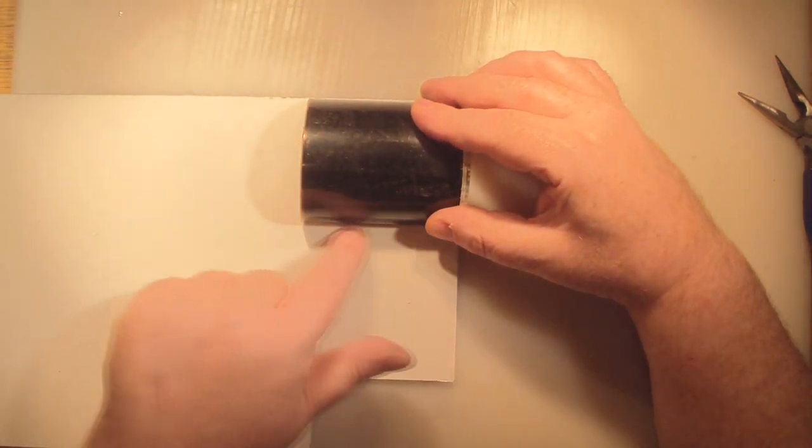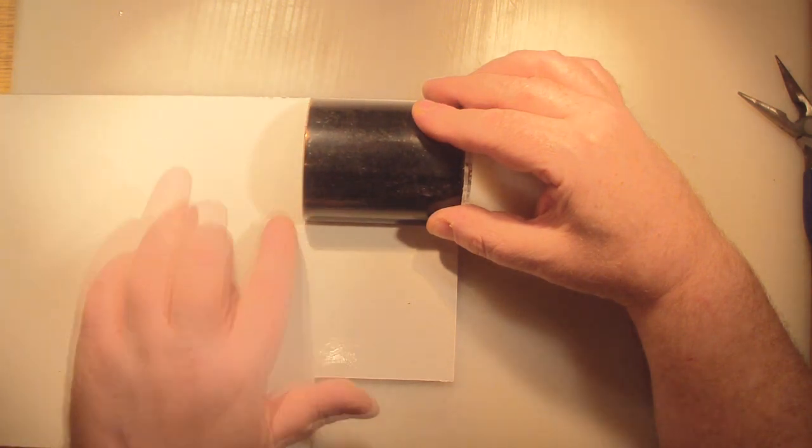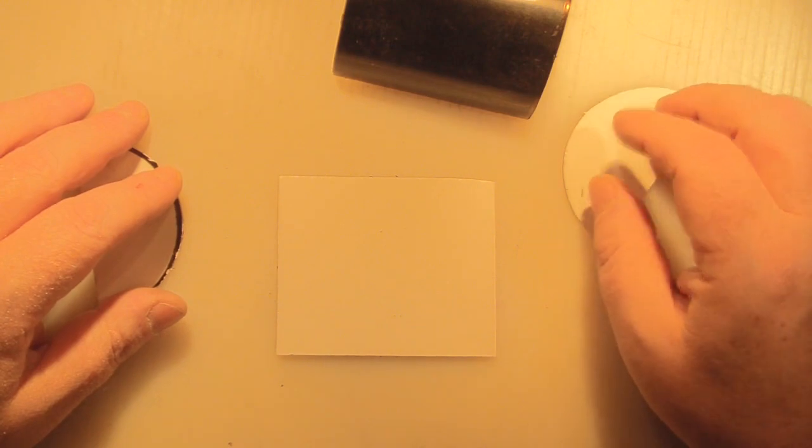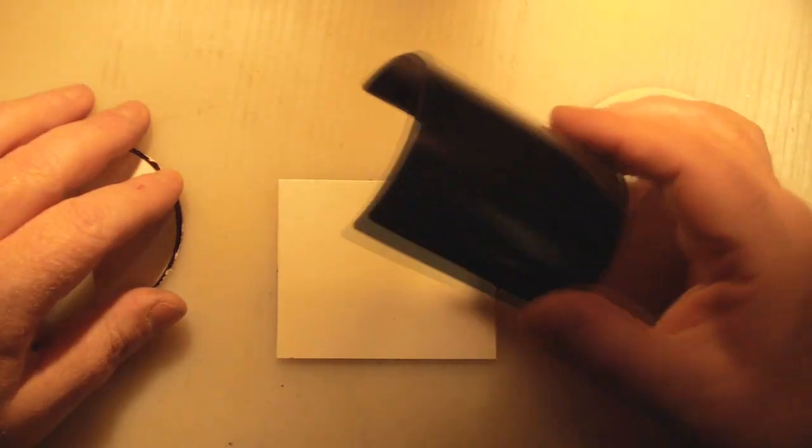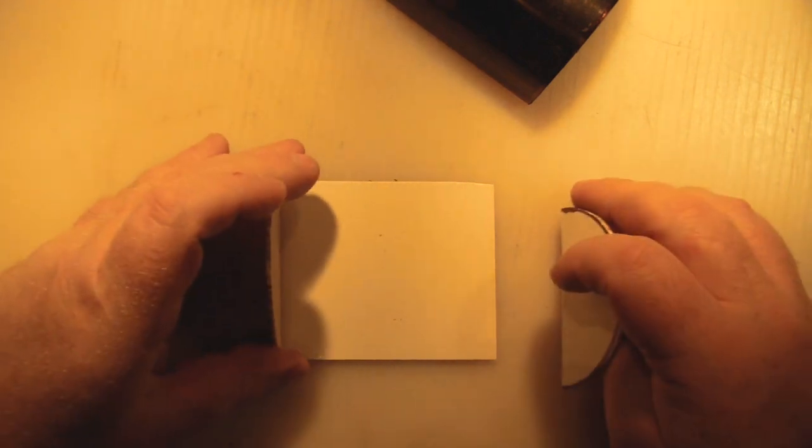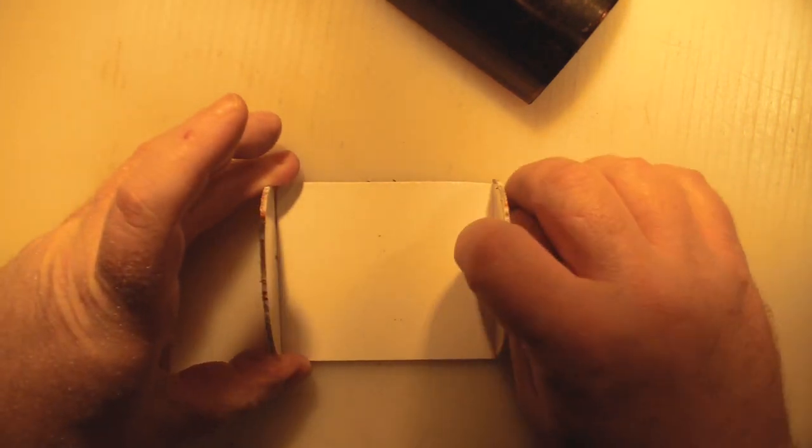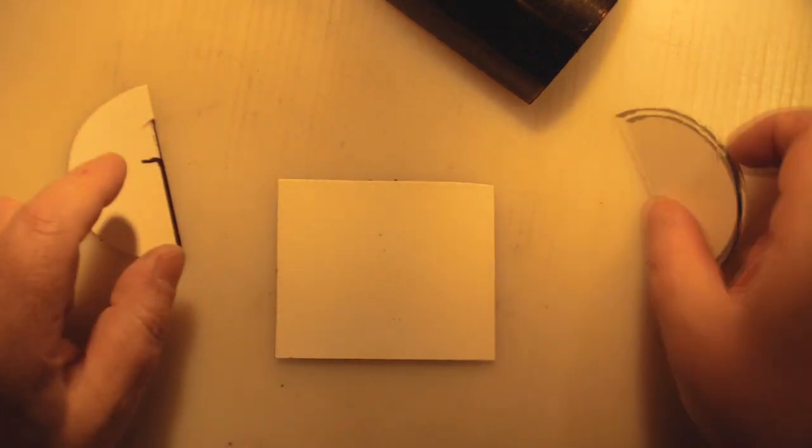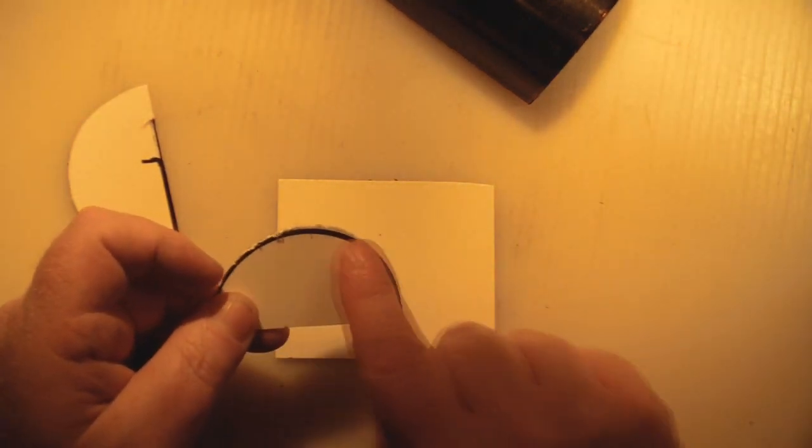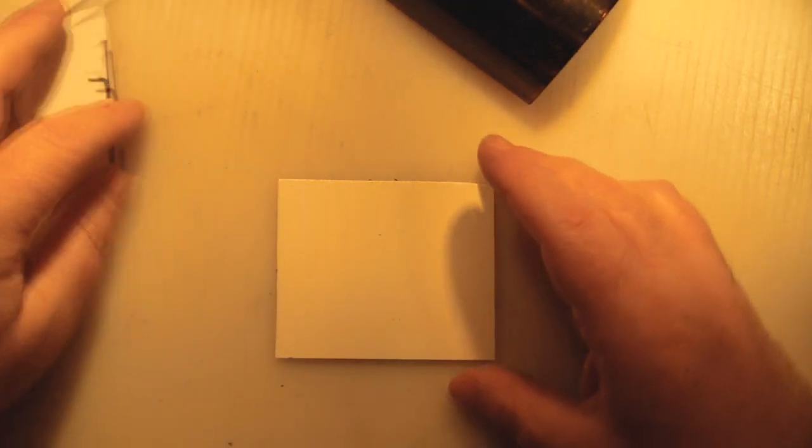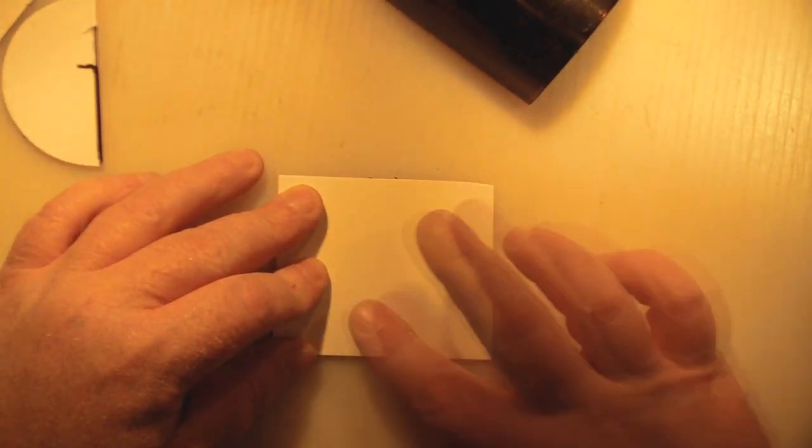Now we've got our back reflector actually cut out using this as a template and leaving enough room on the sides so these will sit on the edges like so. You don't have to be too accurate cutting those out because we'll get rid of all that with a sanding block later when we construct it.